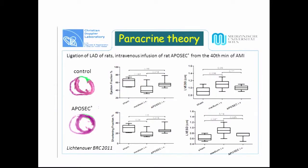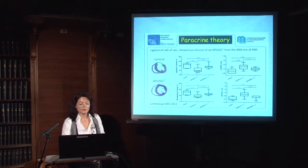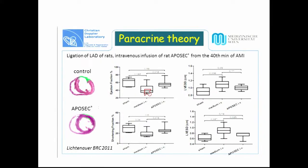This slide shows our first experiment with the paracrine theory. We ligated the left anterior descending coronary artery of rats and injected APOSEC — the secretome of peripheral blood mononuclear cells — 40 minutes after the setting of myocardial infarction. The ejection fraction decreased in infarcted rats treated with medium, but if the rats received APOSEC intravenously, the ejection fraction and shortening fraction increased significantly.